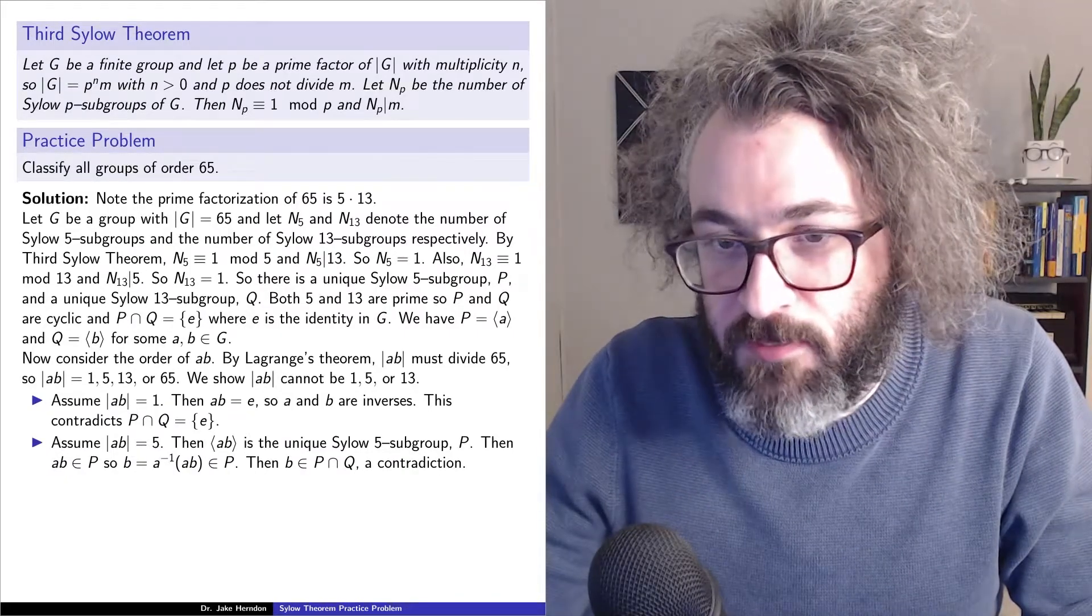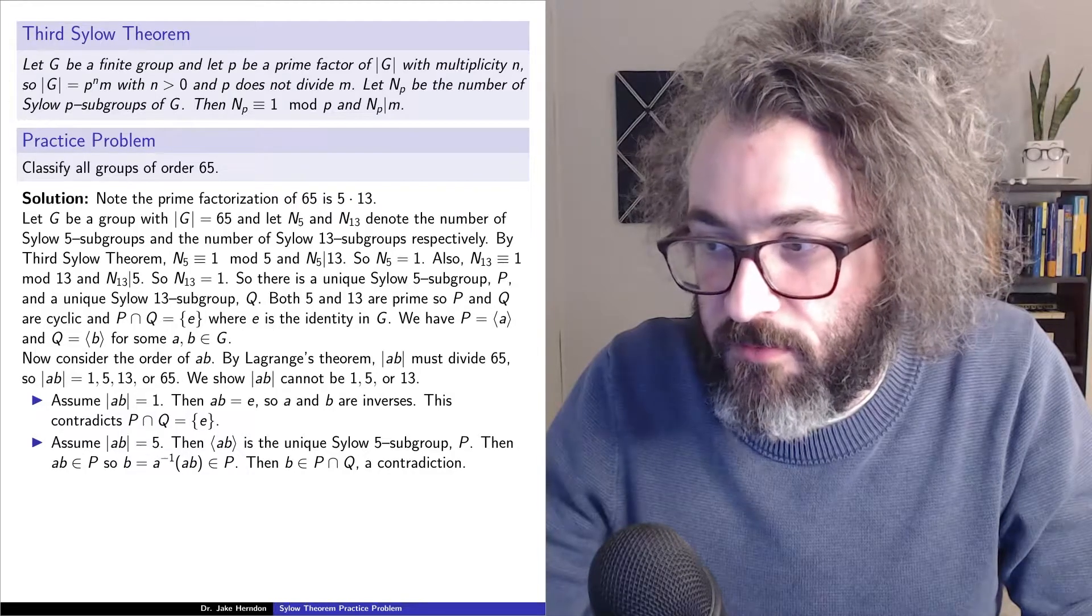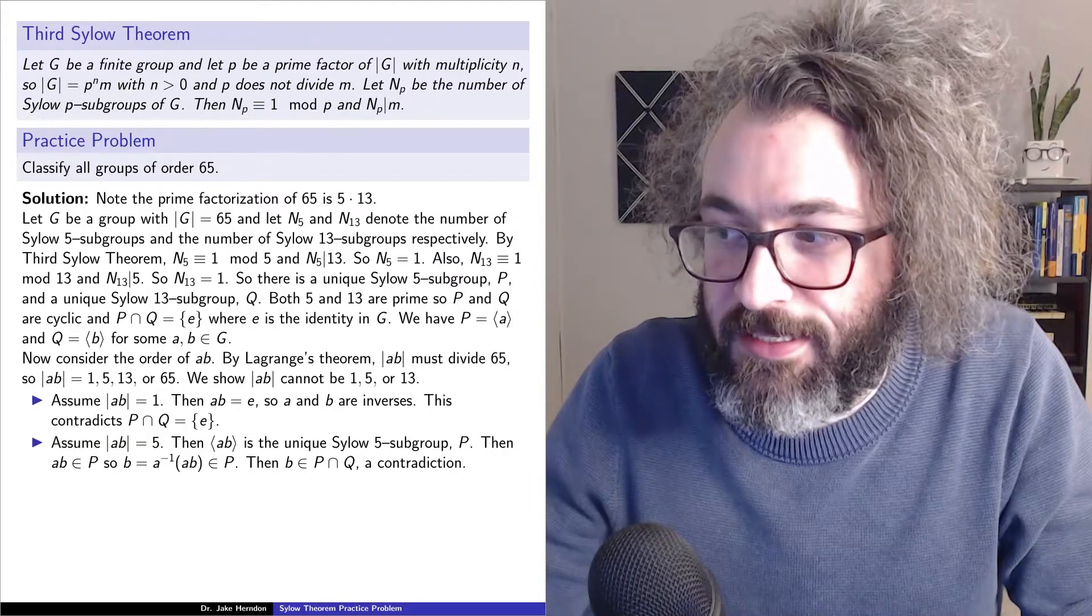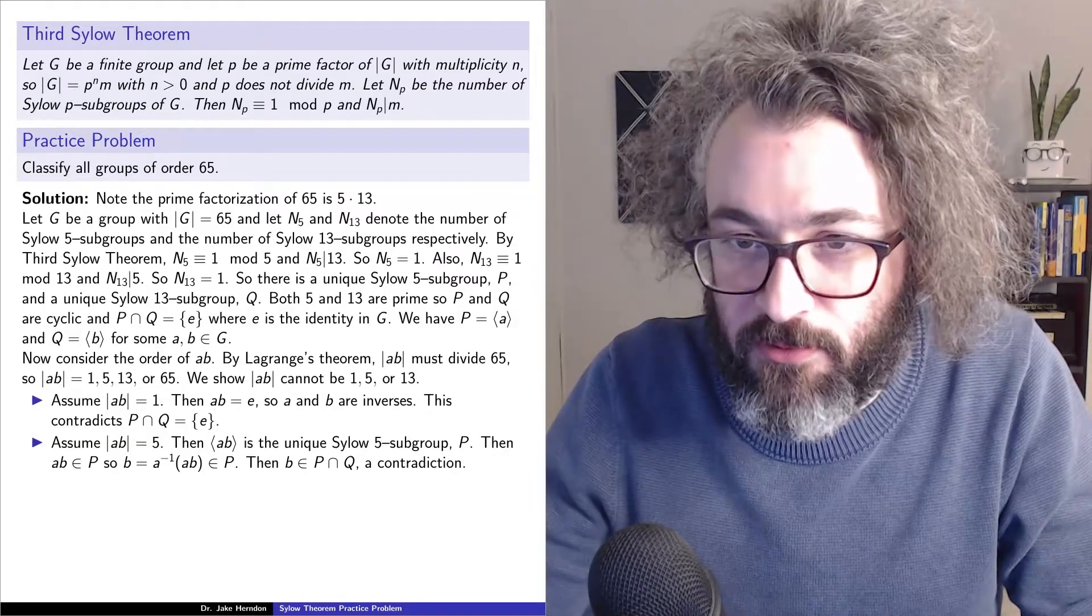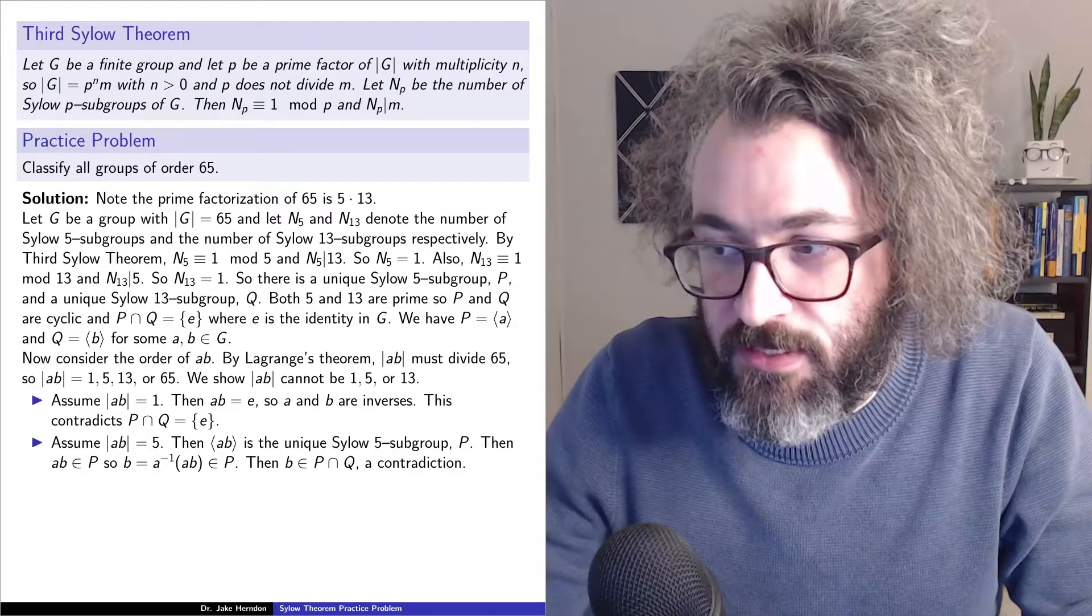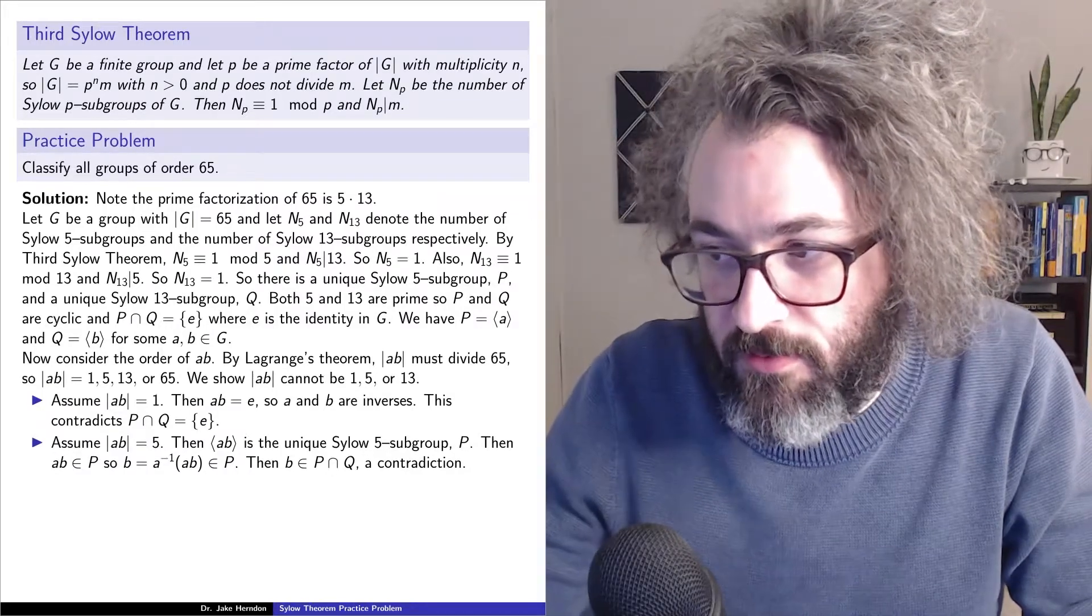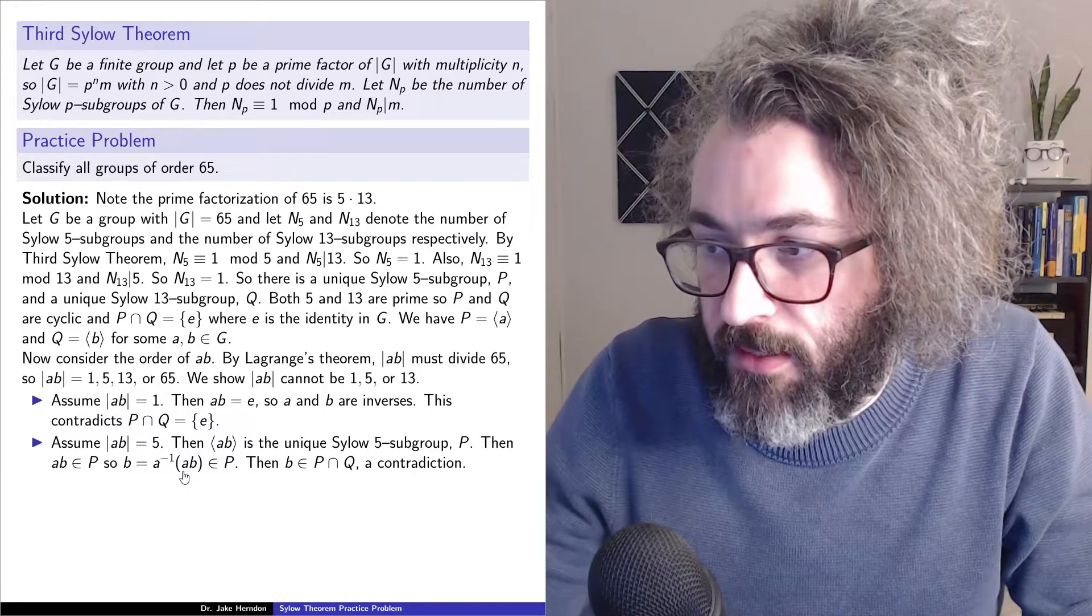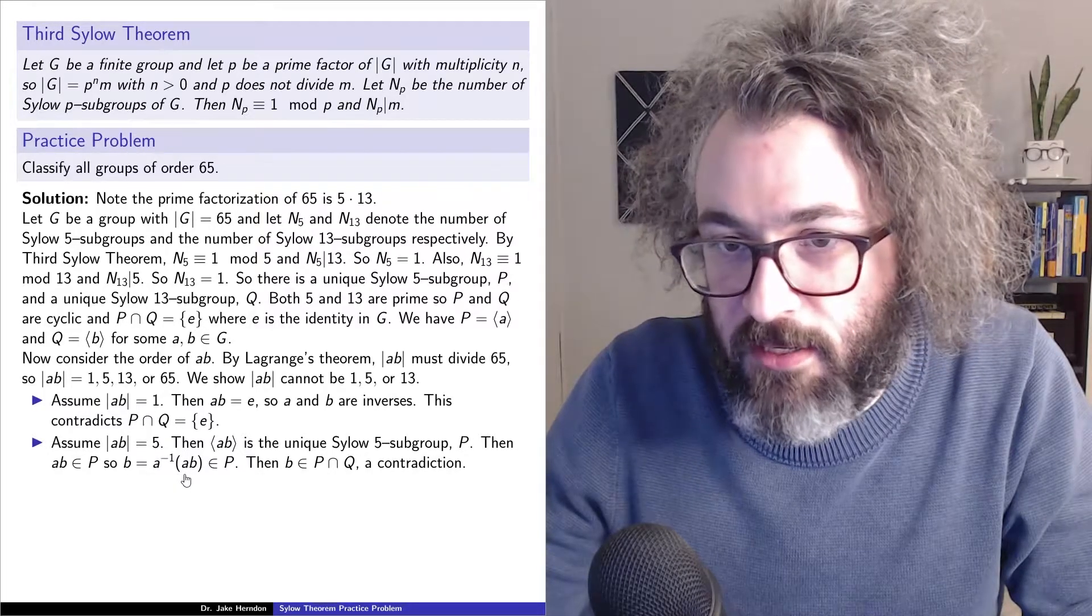All right, so now assume that the order of a times b is equal to 5. Well, that means that the group generated by a times b is the unique Sylow 5 subgroup P. So that means that a times b is in the group P.